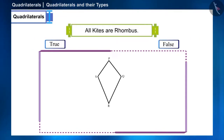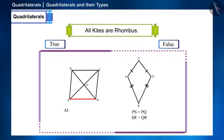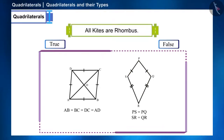As we know, kites have two pairs of different adjacent sides whose length is equal, and all the sides of the rhombus are equal, so both its adjacent sides will also be equal. This means any rhombus can also be a kite, but in a kite, two pairs of different adjacent sides are equal.